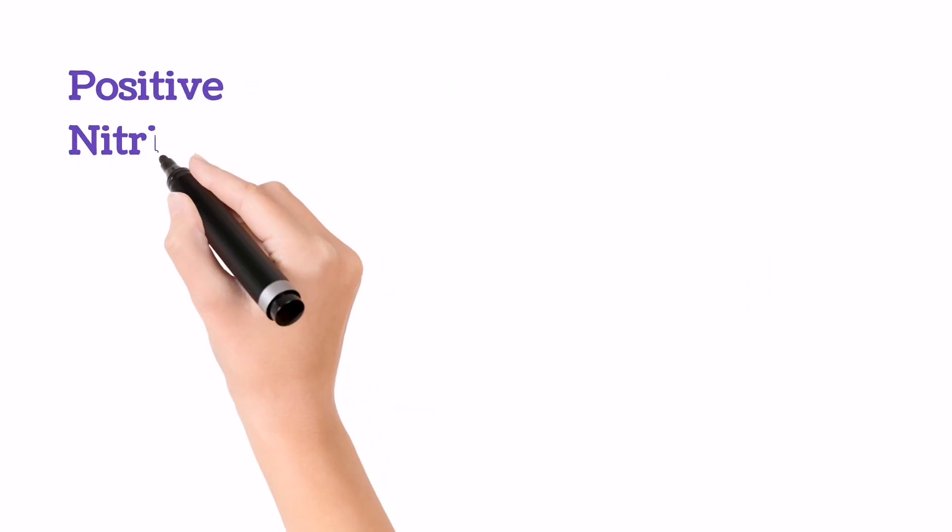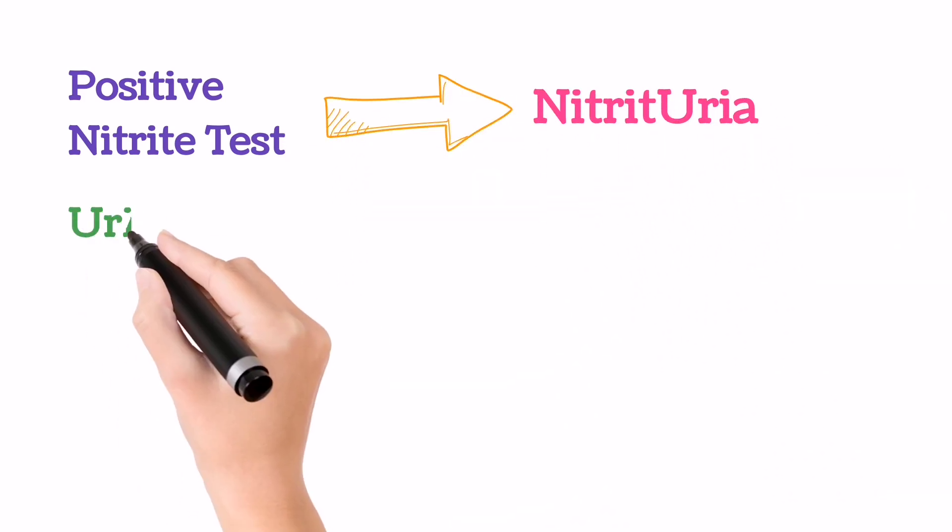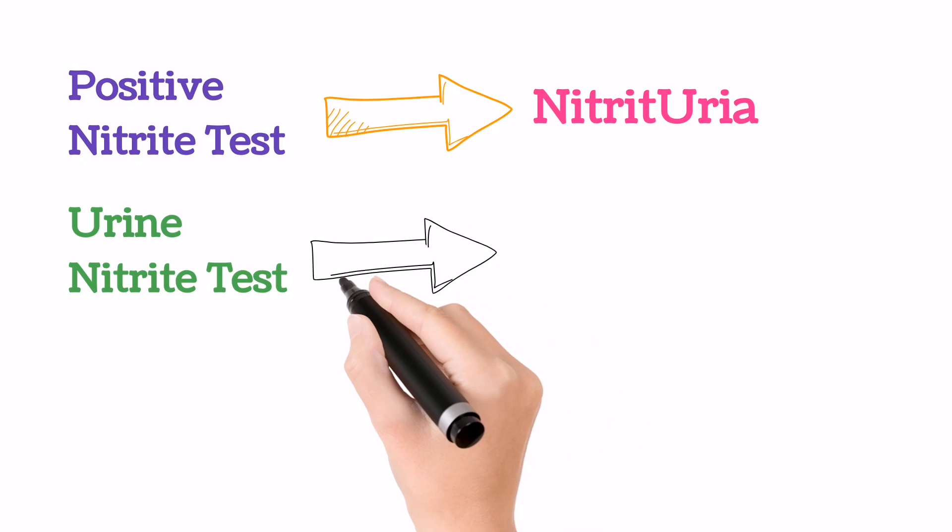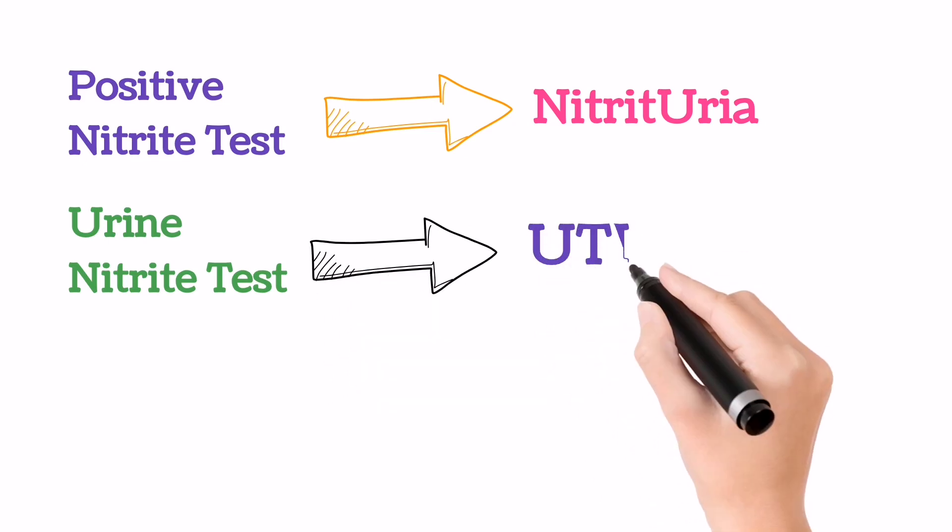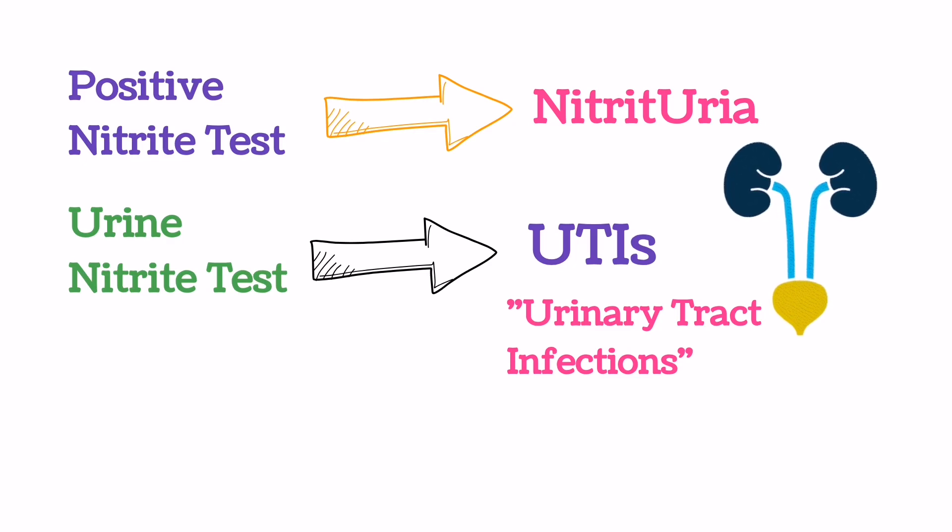If nitrite is present in urine, the condition is called nitrituria. This urine nitrite test is used to diagnose different urinary infections, simply UTIs, in the body.